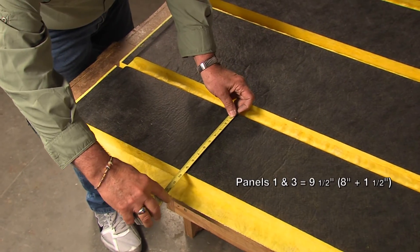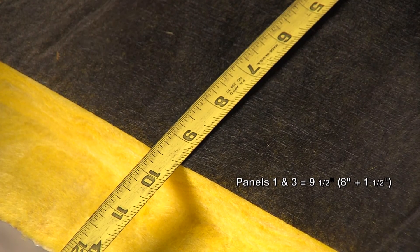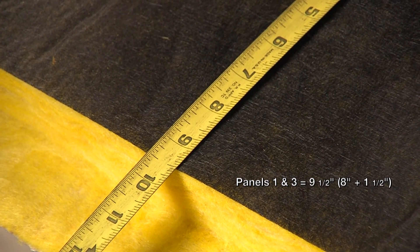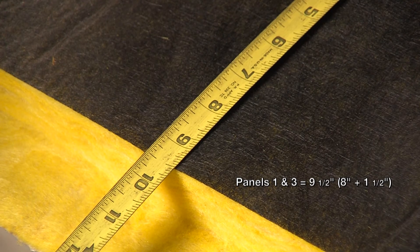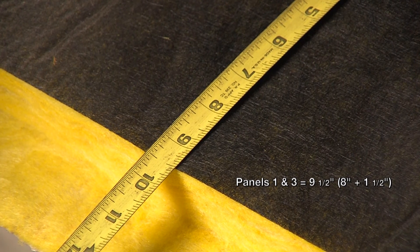In this case, the first panel and the third panel should measure nine and one half inches, which is the eight inches plus one and a half inch. We add the inch and a half to the square edge panel because the board gets overlapped by the shiplap sides.